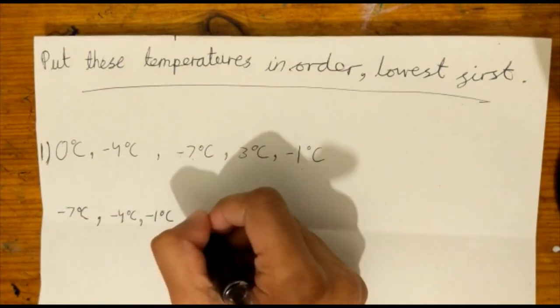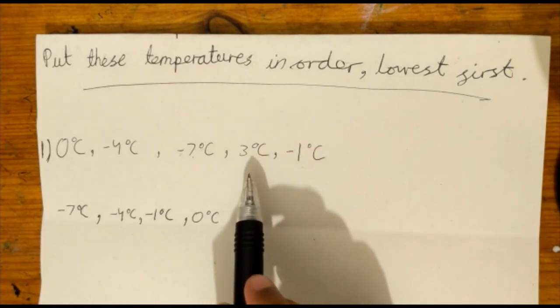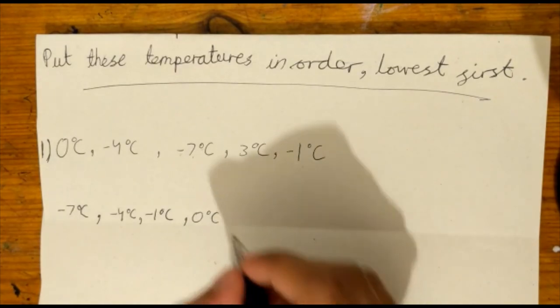Then we have 0 degrees. It is 0 degrees because we can't have 3 degrees. 3 degrees is higher, so 3 degrees is hotter than 0 degrees.